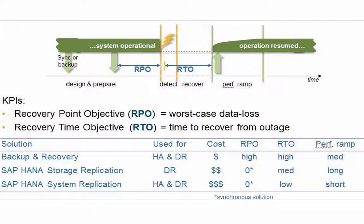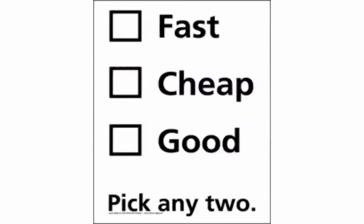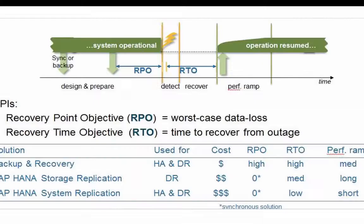Here we see a comparison on RPO, RTO, cost, and performance consequences — the ramp-up time needed to get back in business. As always, you can get it fast, cheap, or good, and you pick any two. Backup gives disaster recovery at relatively low cost, but requires patience before we are back in business should something disastrous occur. The more often you backup, the more storage you need, hence the cost will go up, plus it will still be relatively slow.